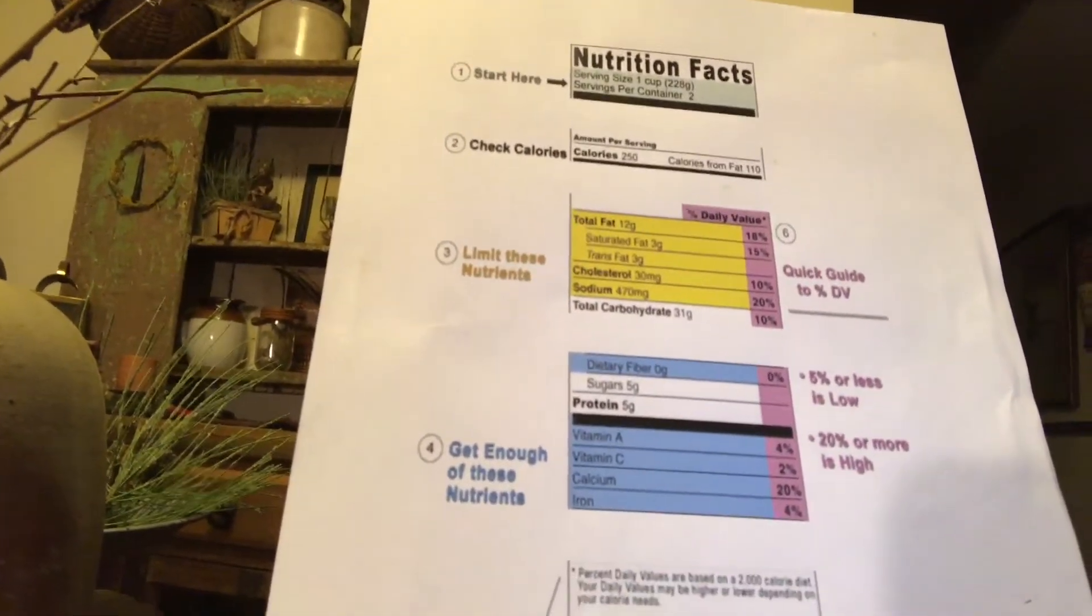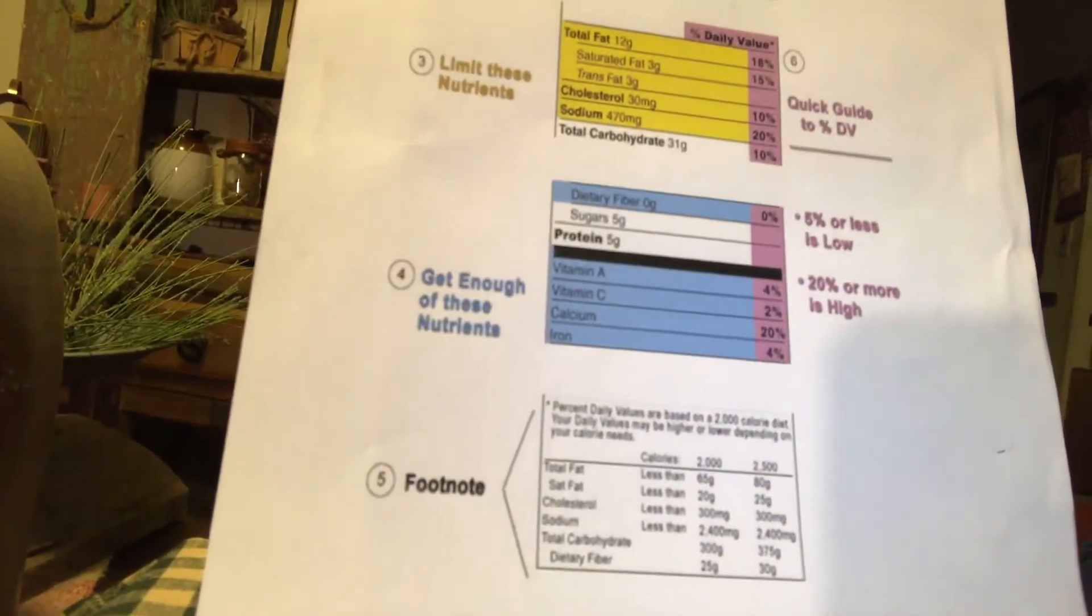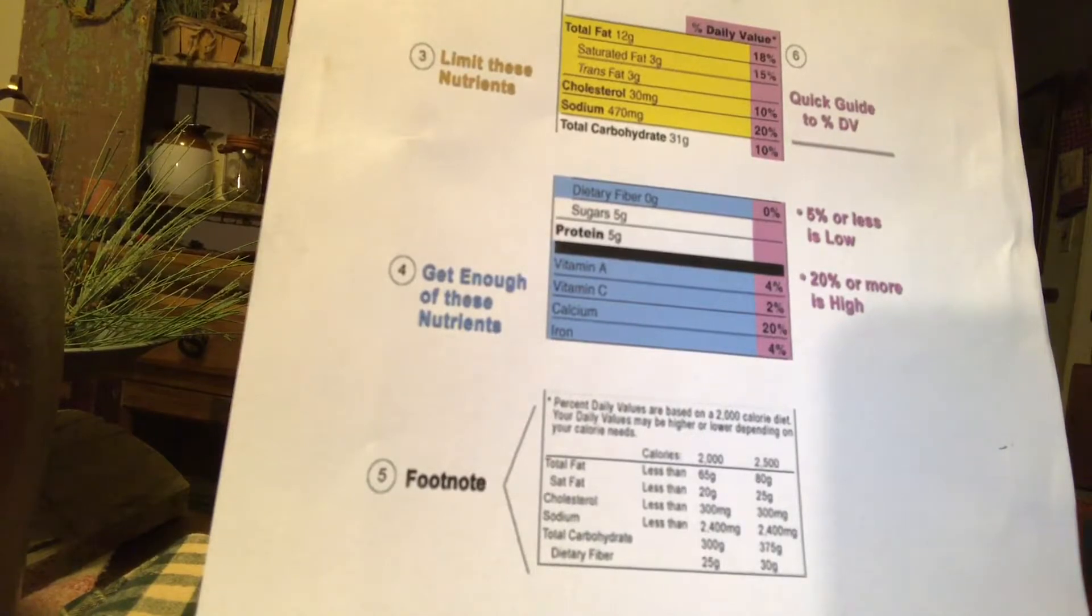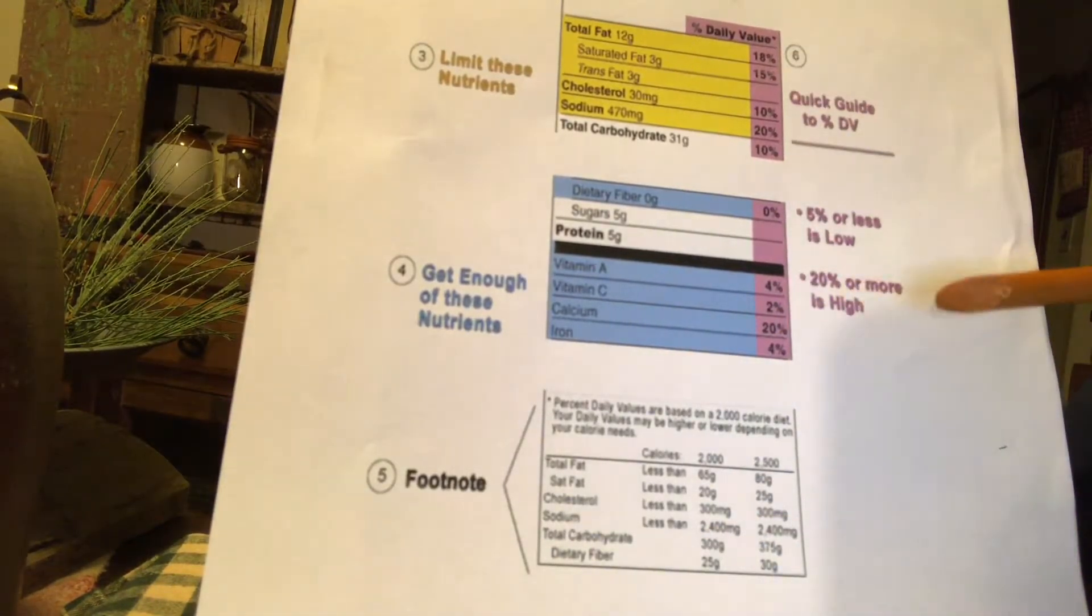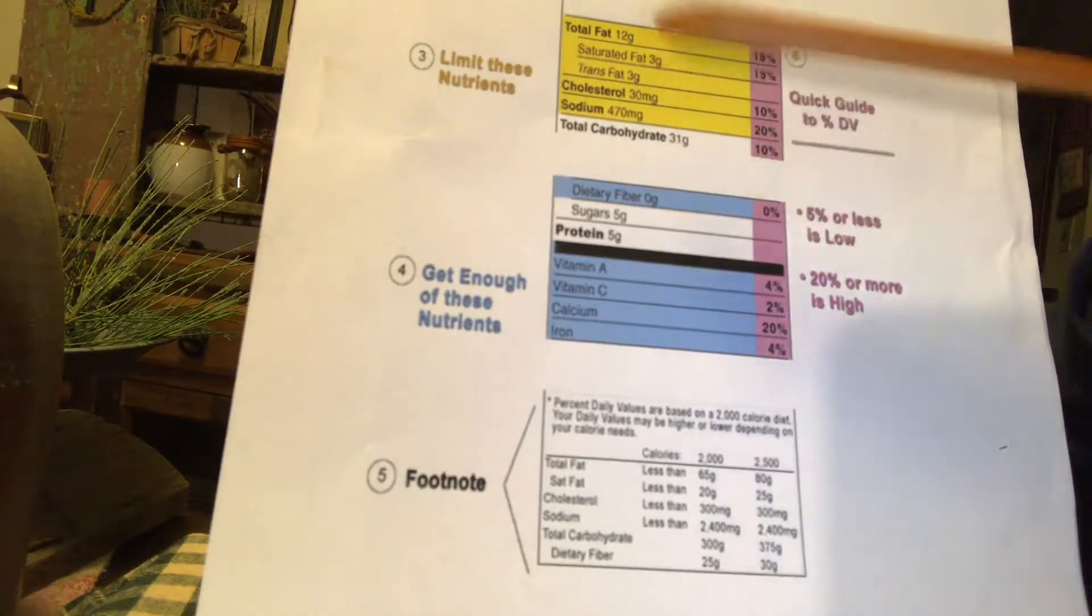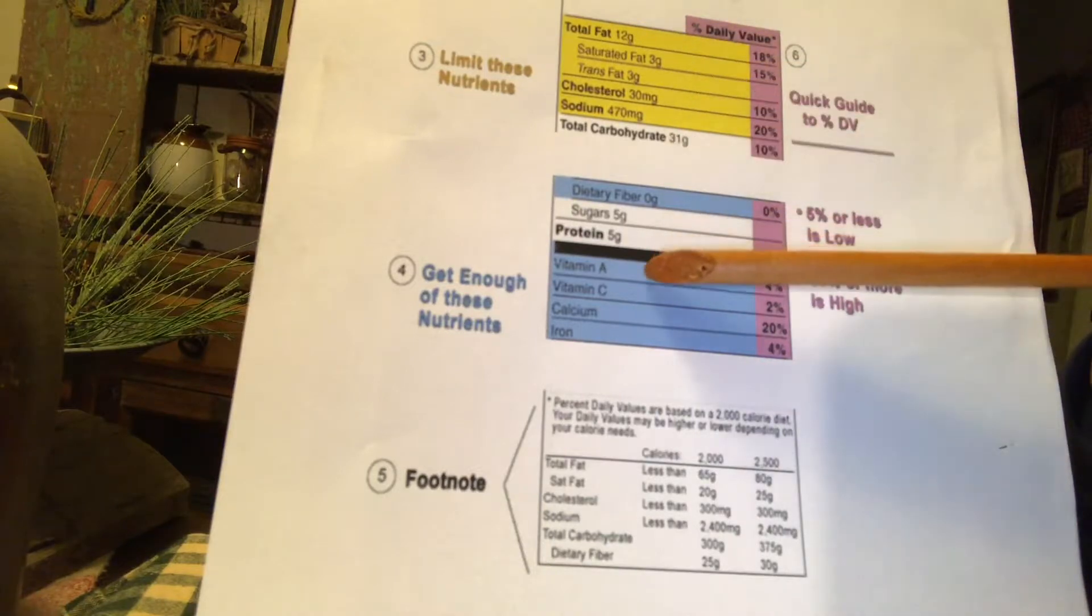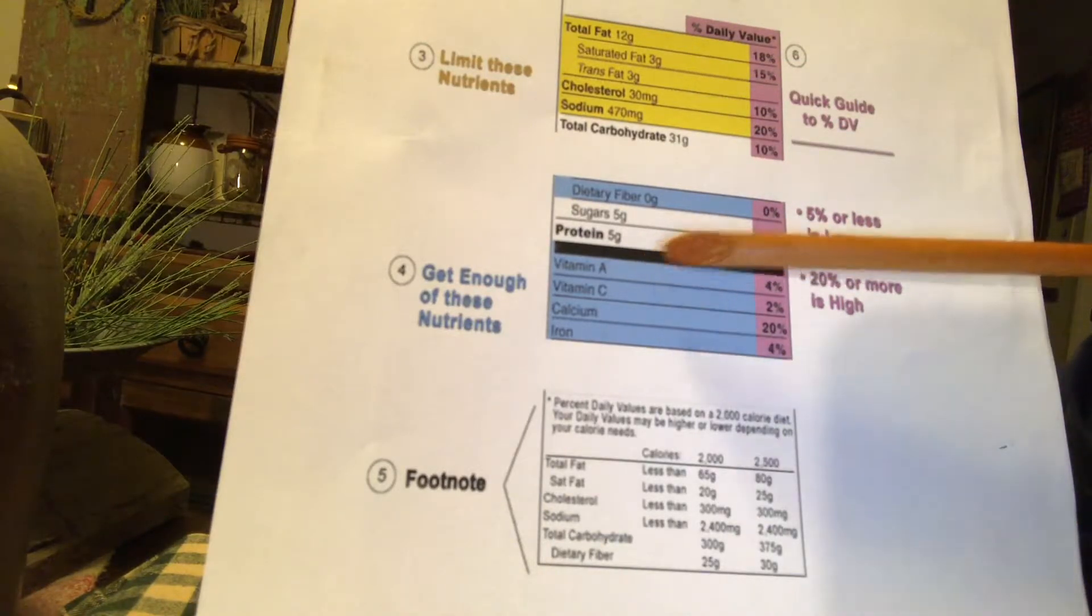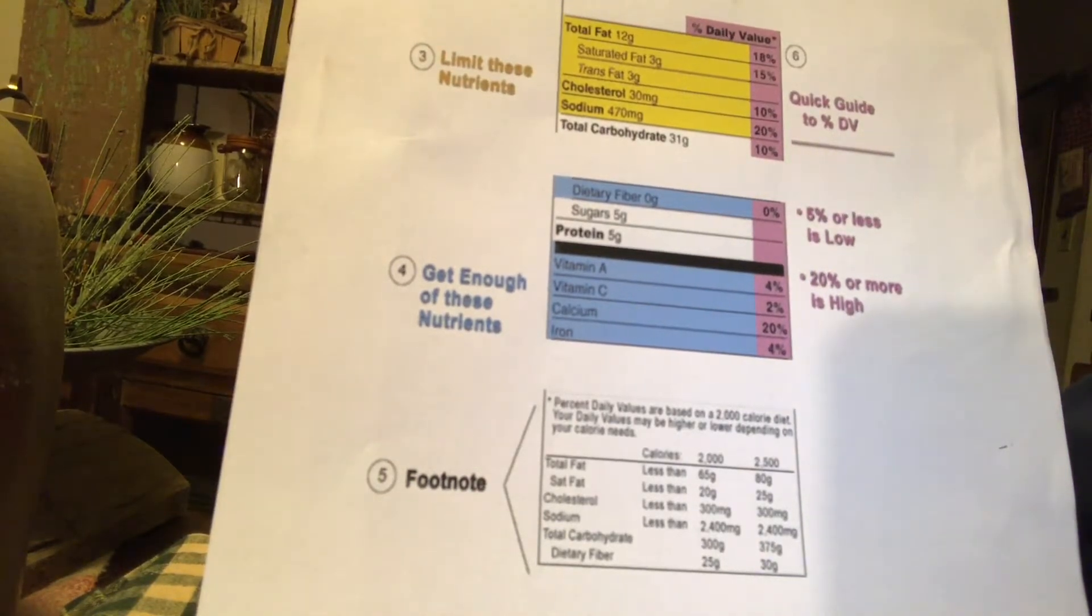Now, if you go down to the next item here, this is what's called the footnote. Now, both the footnote and the area shaded in purple, these are guidelines that have been created by the FDA so that you can make better food choices based on the information of what is in each item of these nutritional foods or these ingredients on here.